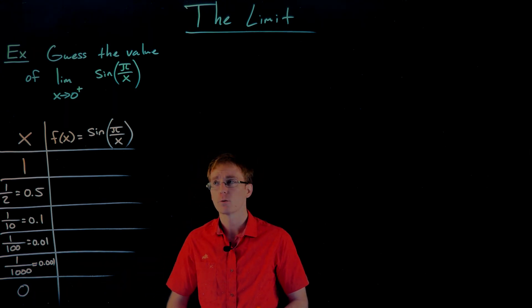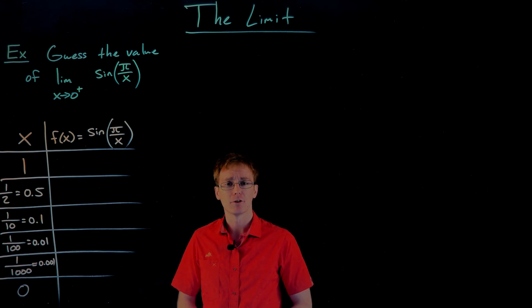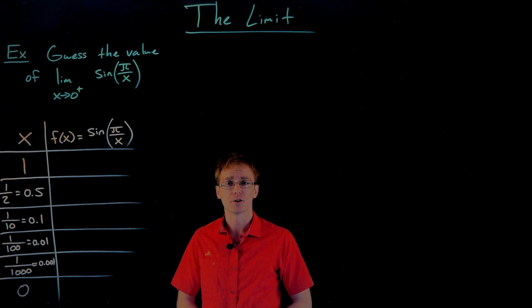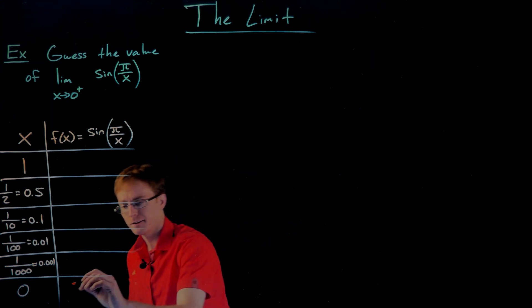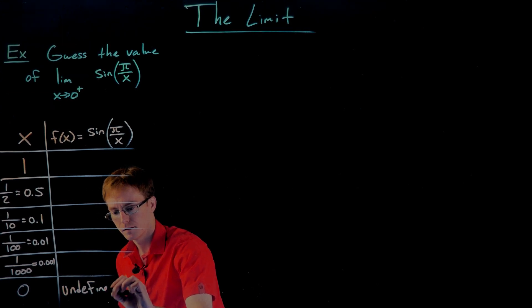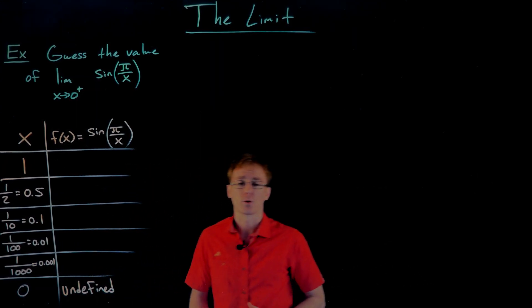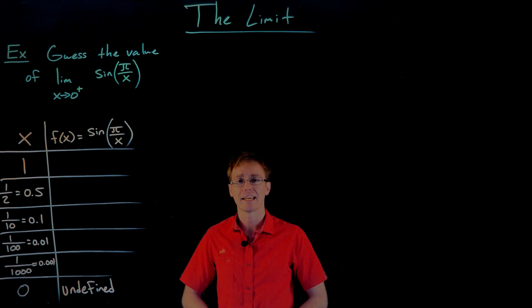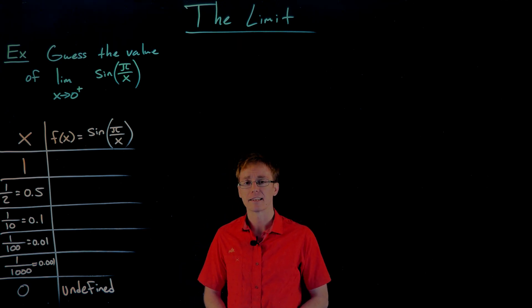And so in some of our previous examples, we could actually have found the limit just by plugging our limit value of interest into our function. Here our limit value is zero, but if we tried to plug zero into our sine of pi over x function, we would see that it is undefined. So that shortcut will not work for us here. We're going to talk in later sections exactly when we can apply a shortcut like that. Here we cannot. So we have to plug in all of these x values now and see what happens to the output of our function.